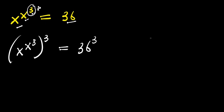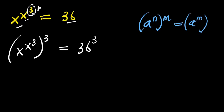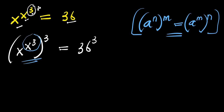The next step will be for us to consider this identity: if you have a power n raised to the power of m, this equals a power n raised to the power of n. We apply this identity — x power 3 will be our n, and this 3 is our m. The m is now inside and the n is outside.